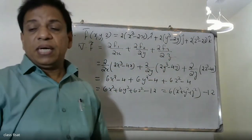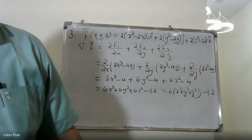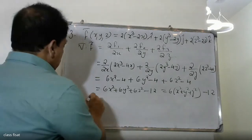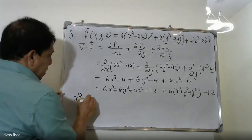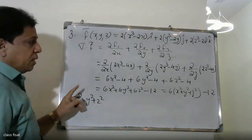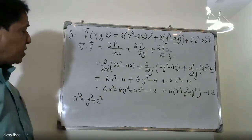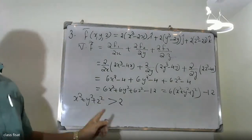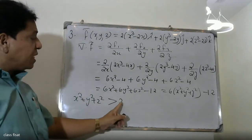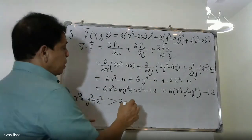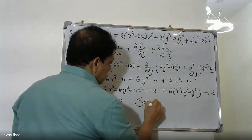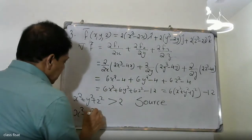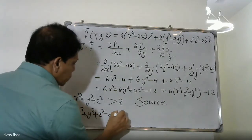The source will be determined here. This gives x² + y² + z² as the key expression. We analyze x² + y² + z² minus terms to determine where the divergence is positive (source) or negative (sink).